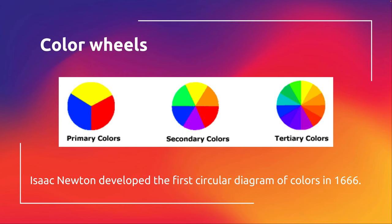We have color wheels — you should be at least somewhat familiar; you've seen a color wheel. Isaac Newton was one of the first to develop the circular diagram — not necessarily the color wheel as we know it, but to start thinking about colors scientifically. You have your general primary colors, three primaries.